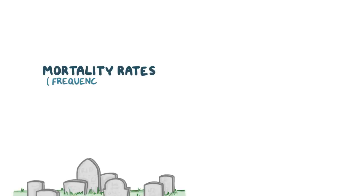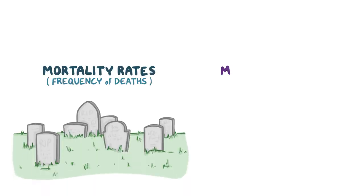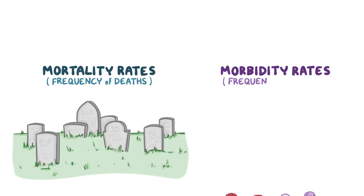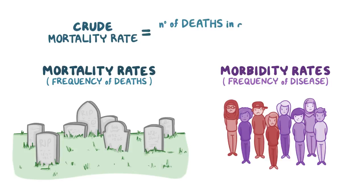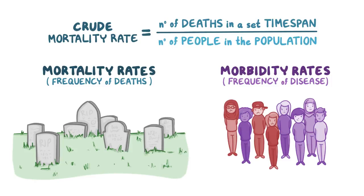In epidemiology, we often want to compare the mortality rates, or the frequency of deaths, and morbidity rates, or the frequency of a certain disease, in different populations. Typically, we do this by calculating the crude mortality rate for each population, which is the number of deaths that occur within a certain time span, like a year, divided by the total number of people in the population.